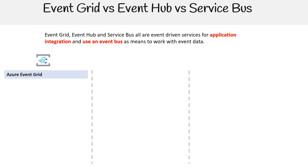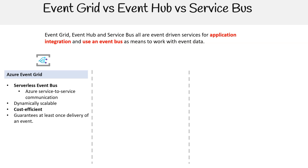Azure Event Grid provides the backbone for event-driven architectures without the need for infrastructure management. It enables Azure service-to-service communication, primarily designed for communication between various Azure services. It is dynamically scalable, cost-efficient, and guarantees at least once delivery of an event.